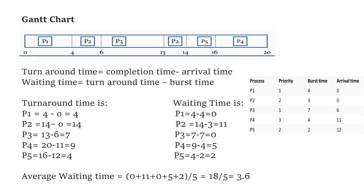No process will be in the queue, so everything will be completed. This is the completed Gantt chart, which represents the order of execution of processes: P1 completes at time 4; P2 completes at time 14 as it was preempted in between; P3 completes at time 13; P4 completes at time 20; and P5 completes at time 16.